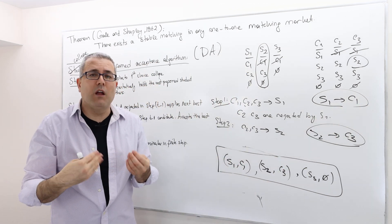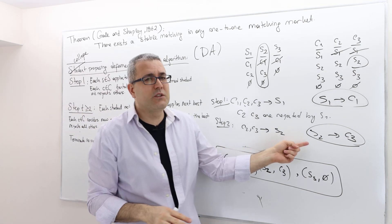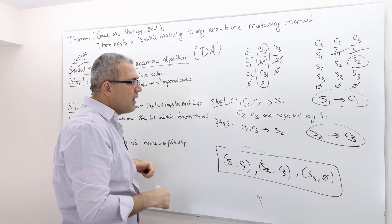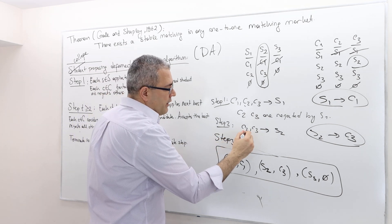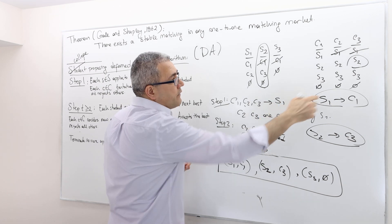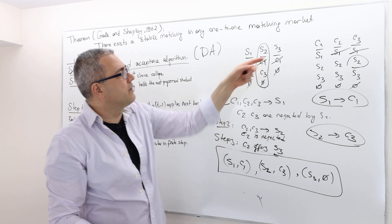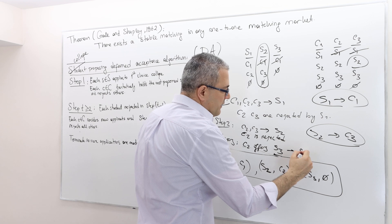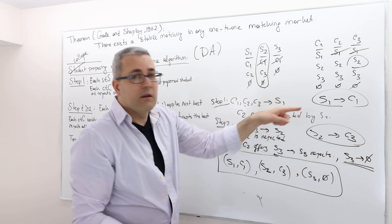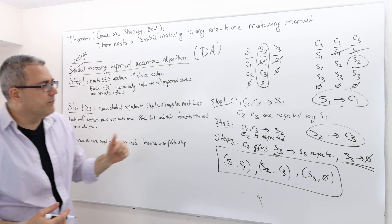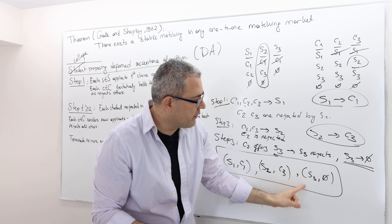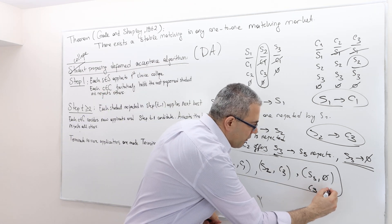If student two receives any better offer later, they would switch, but the better option — college one — is already out of the picture. College two is rejected. In step three, C2 offers student three, but student three says college two is unacceptable and rejects the offer, leaving student three unmatched. So using college-proposing deferred acceptance, the outcome is: student one matched with college one, student two matched with college three, student three matched with nothing, and college two matched with nothing.